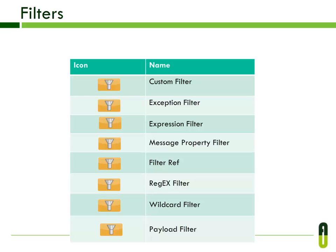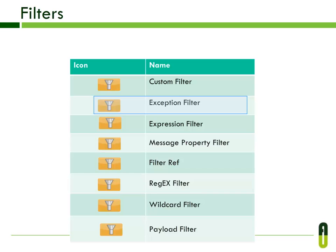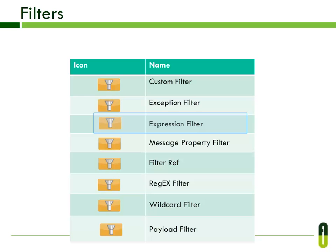Here you can see the different types of filters. The Custom filter allows user-implemented filtering — you can create your own filter by implementing the filter interface. The Exception filter matches an exception type. The Expression filter evaluates a range of expressions using evaluators such as XPATH, JXPATH, OGNL, or a custom evaluator. The Message property filter adds logic to your routers based on the value of one or more message properties, which can reference any transport-specific or user-defined property.